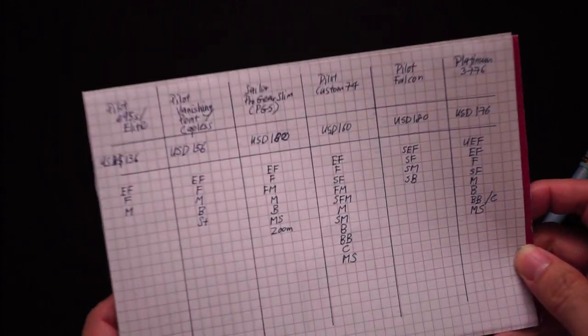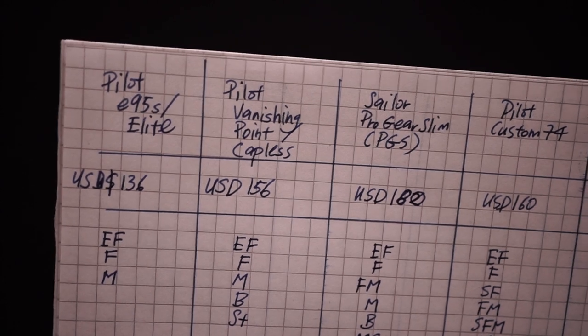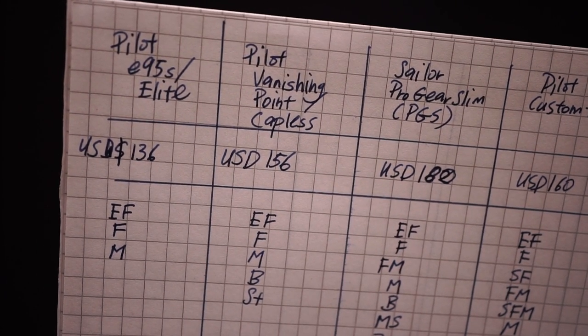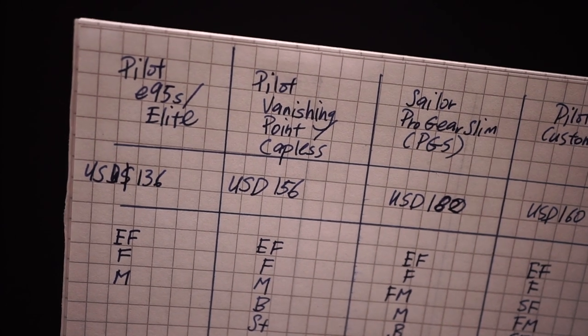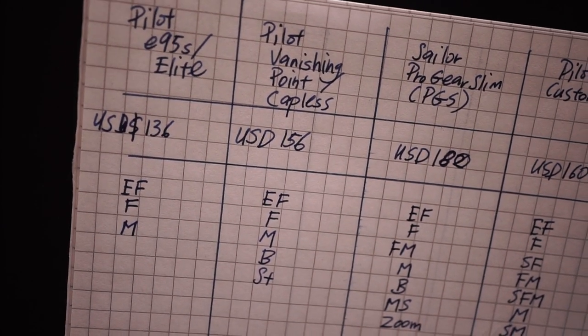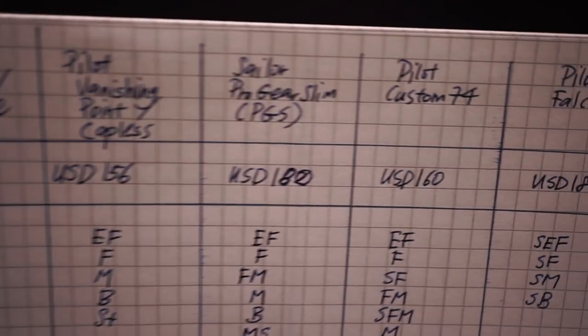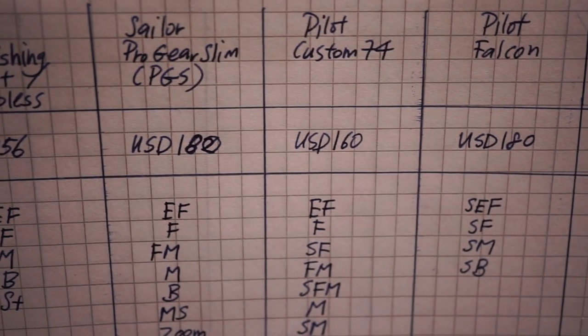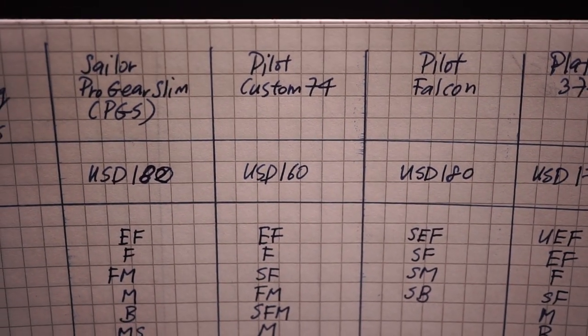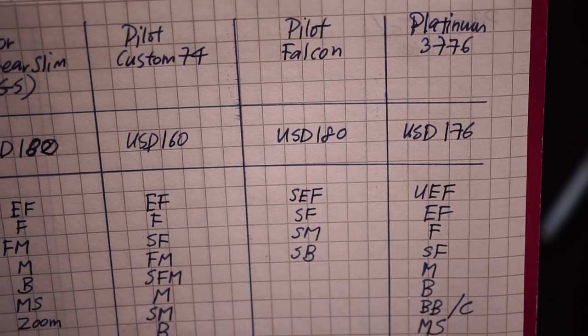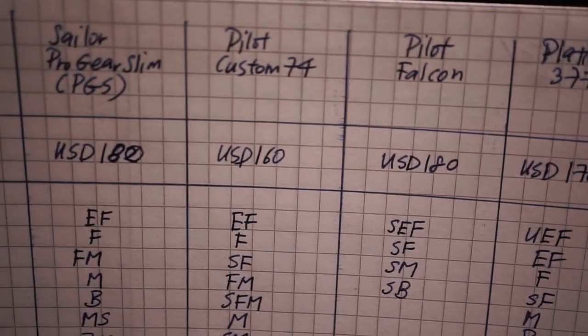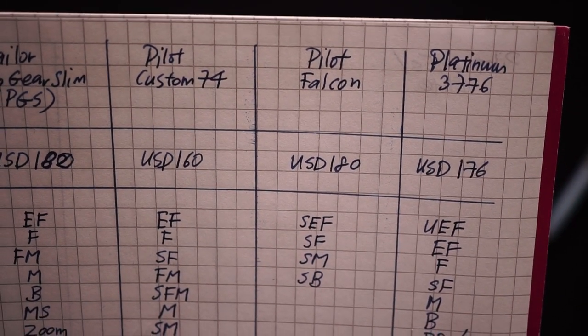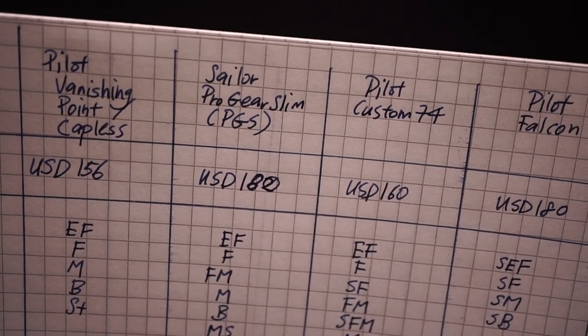First, let's look at the specs and basic information. The Pilot E95S is the cheapest pen of this group at about 136 US dollars. The next one would be the Vanishing Point at 156 dollars. Afterwards the Pilot Custom 74 at about 160 US dollars. Then the Platinum 3776 at 176. And lastly at a dead heat, the Pilot Falcon at 180 and the Pro Gear Slim at 180 as well.